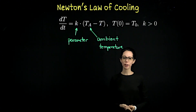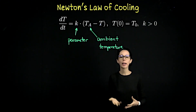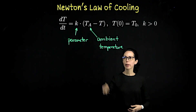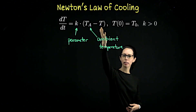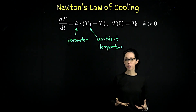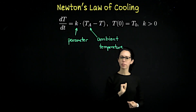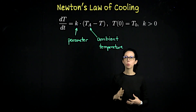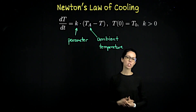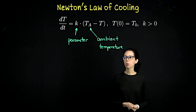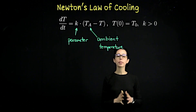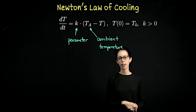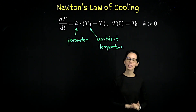This should agree with what you've observed whenever you've had an object cool down or heat up. If your coffee is really, really hot, it's going to rapidly cool down because the difference between the room temperature and your very hot cup of coffee is large, so the rate of change of temperature is going to be a large scaled number. However, once your coffee has cooled down so that it's almost room temperature, the change isn't going to be that drastic over time. That's Newton's law of cooling — it can be used for both cooling and heating up. It's a separable differential equation.